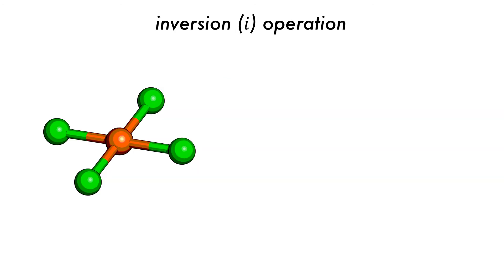One of the more subtle symmetry operations that a molecule can possess is a centre of inversion labelled with i. The previous example we had includes a centre of inversion. If we label each atom with a number, we can see this process more easily.